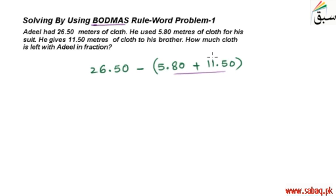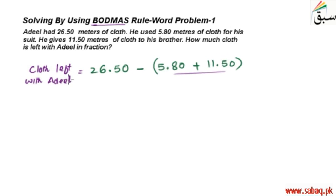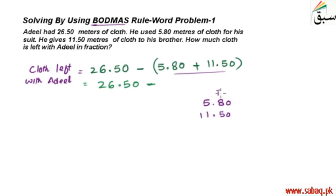These are the things that they are giving away — the cloth given in any way. So these two amounts add together first, and then they will be subtracted from 26.50 meters. So we can find the cloth left with Adil, and express it in fraction. So we will have 26.50 minus...